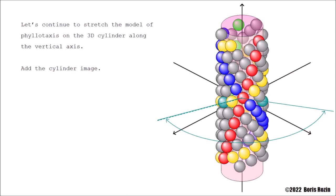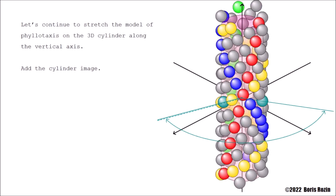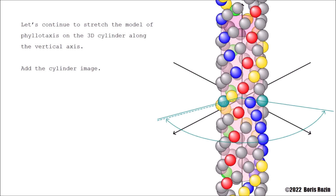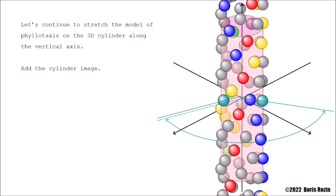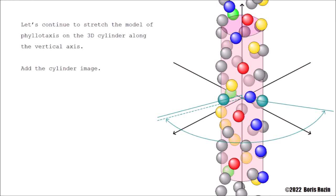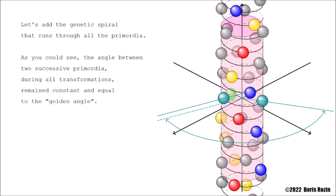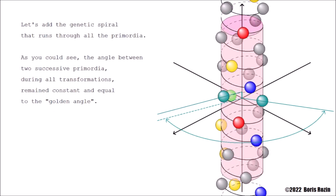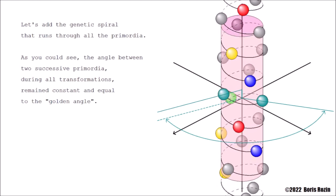Let's continue to stretch the model of phyllotaxis on the 3D cylinder along the vertical axis. Add the cylinder image. Let's add the genetic spiral that runs through all the primordia.